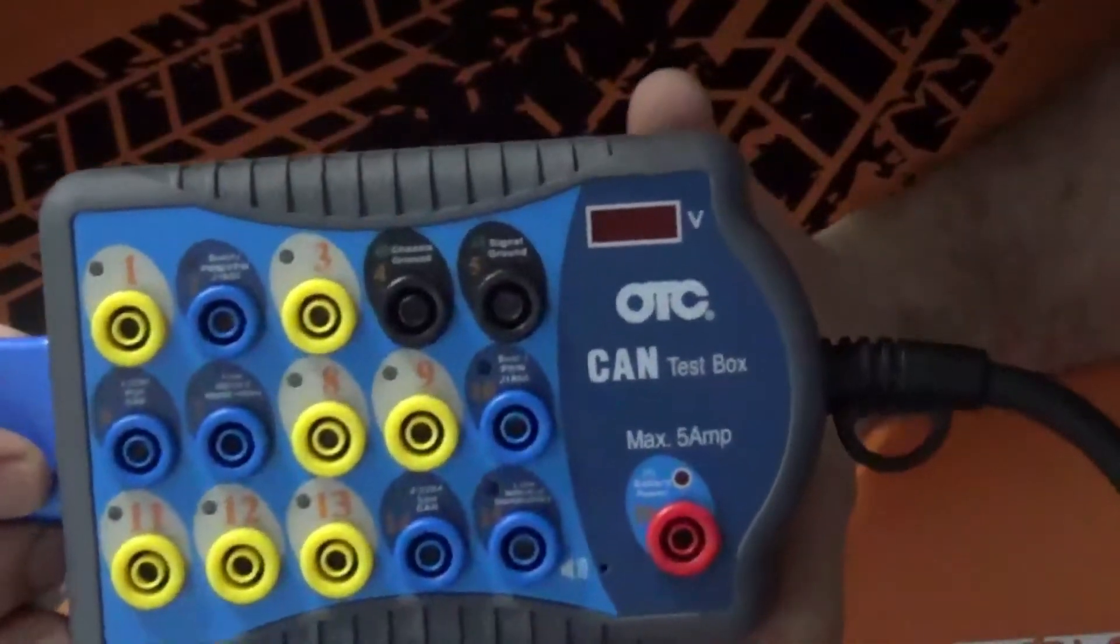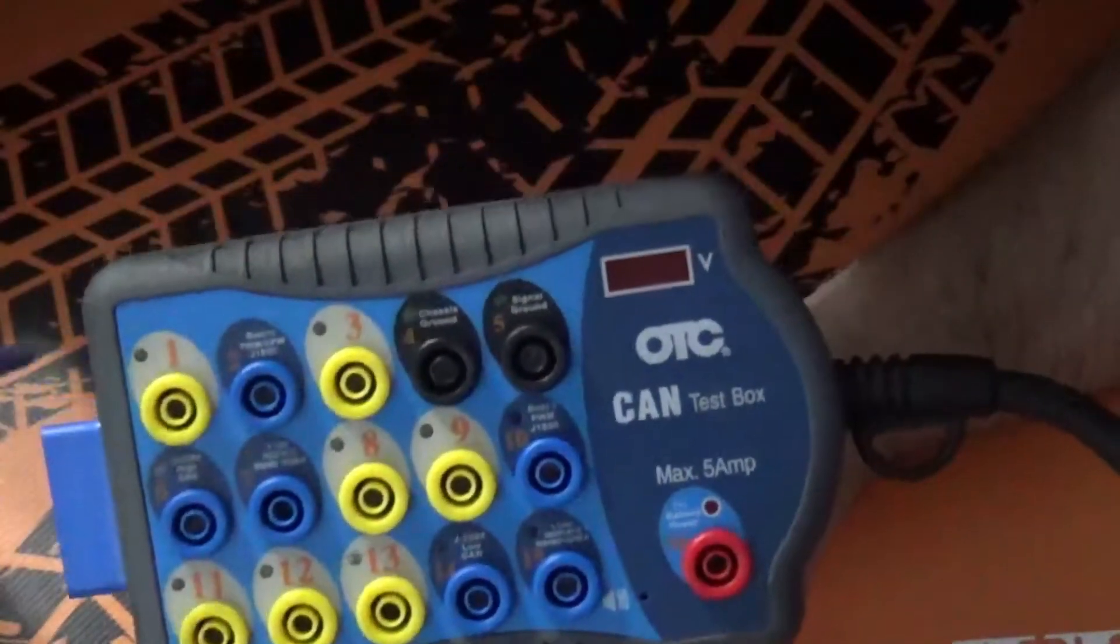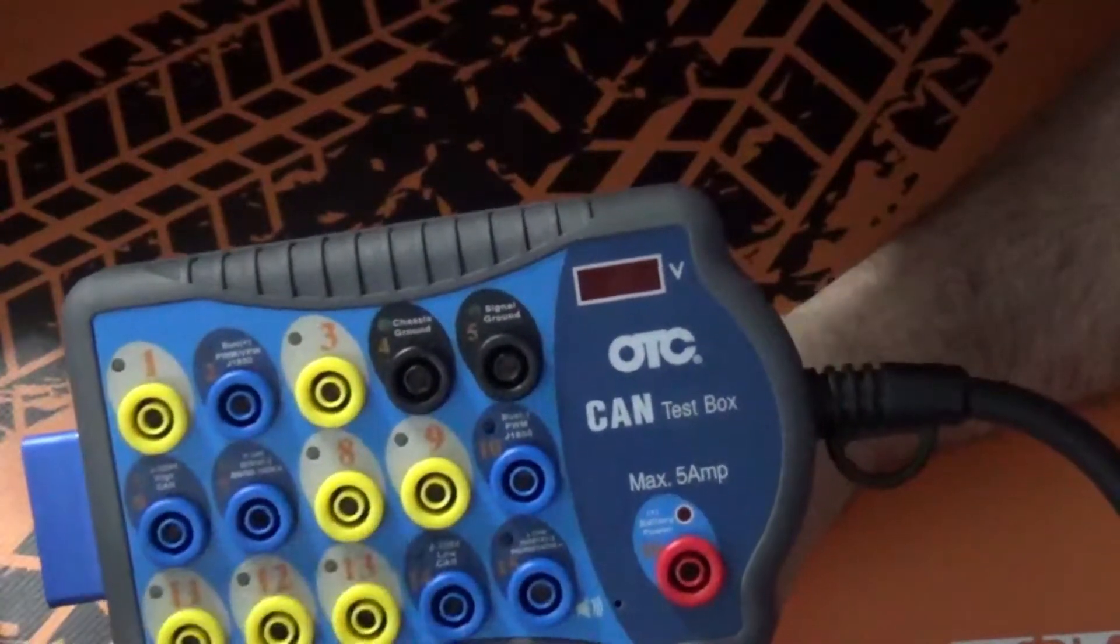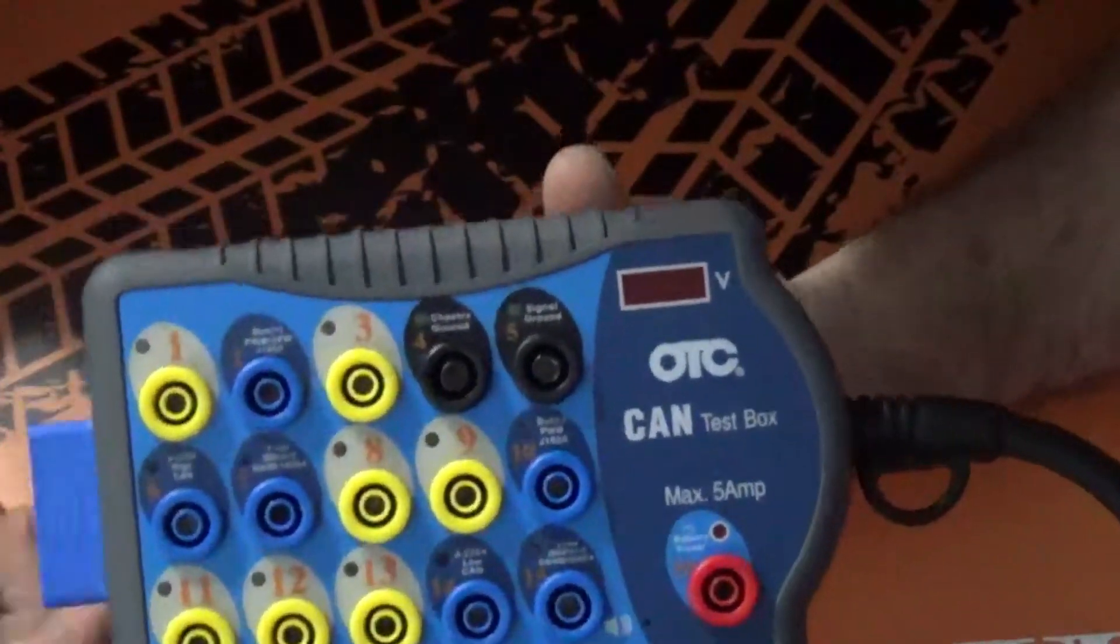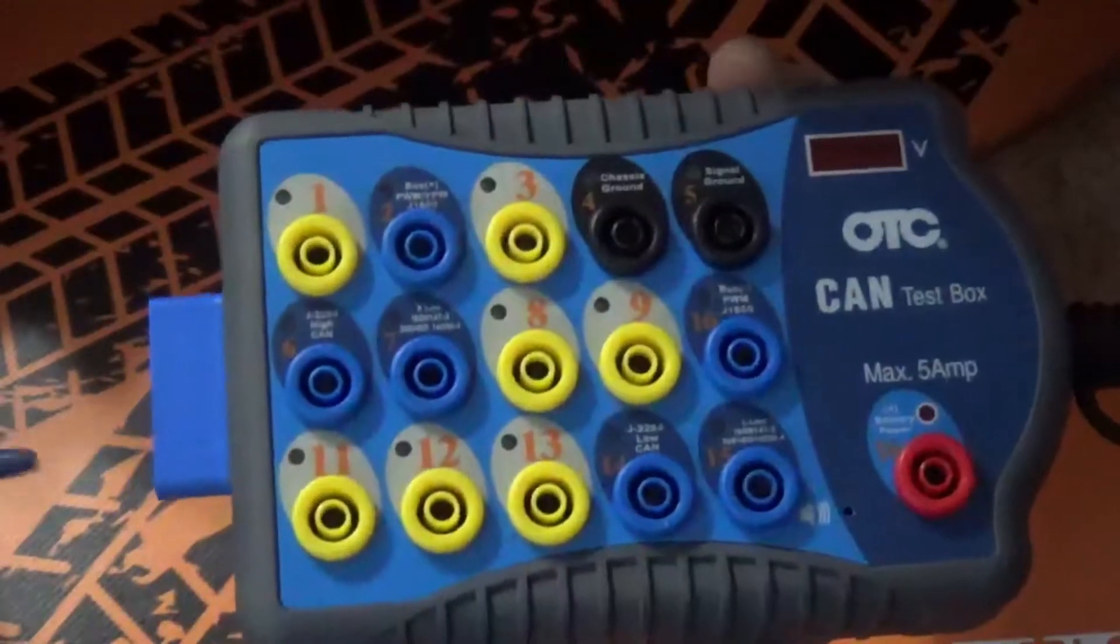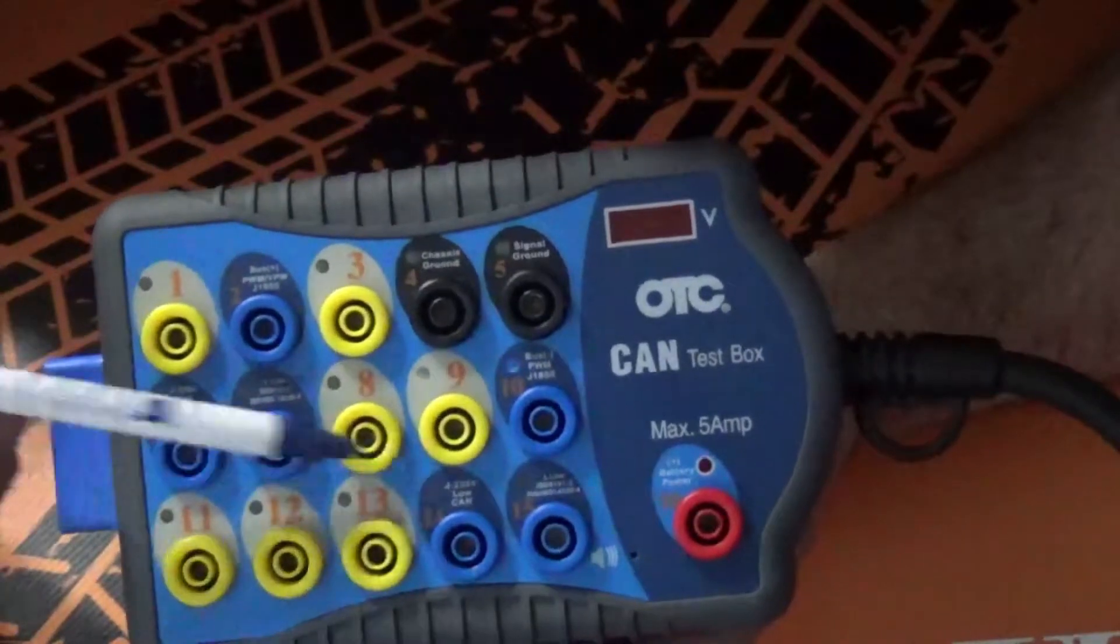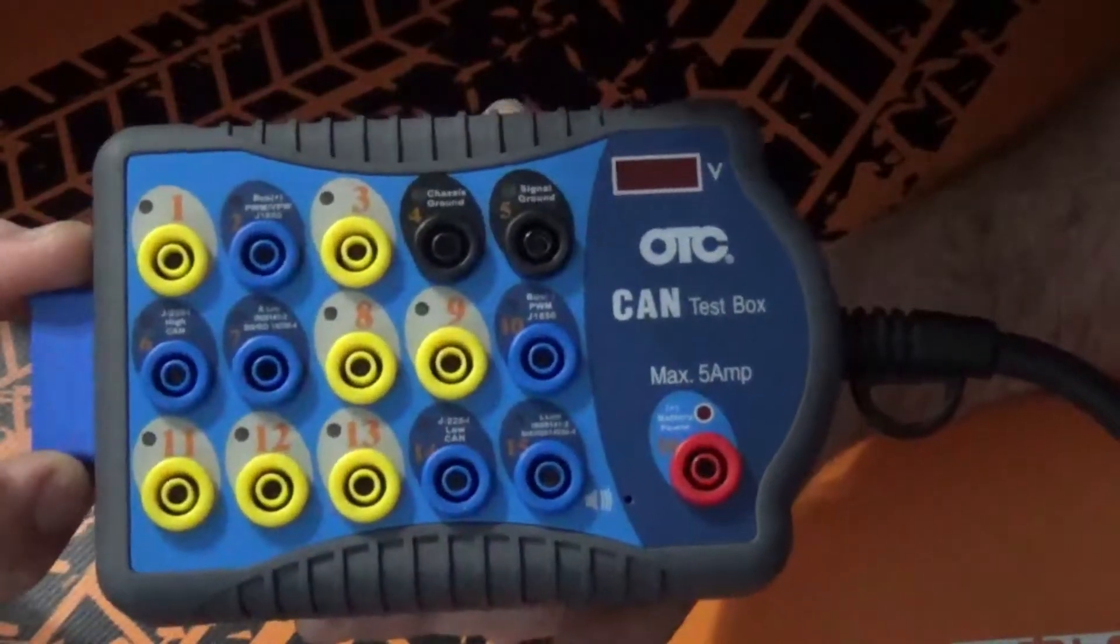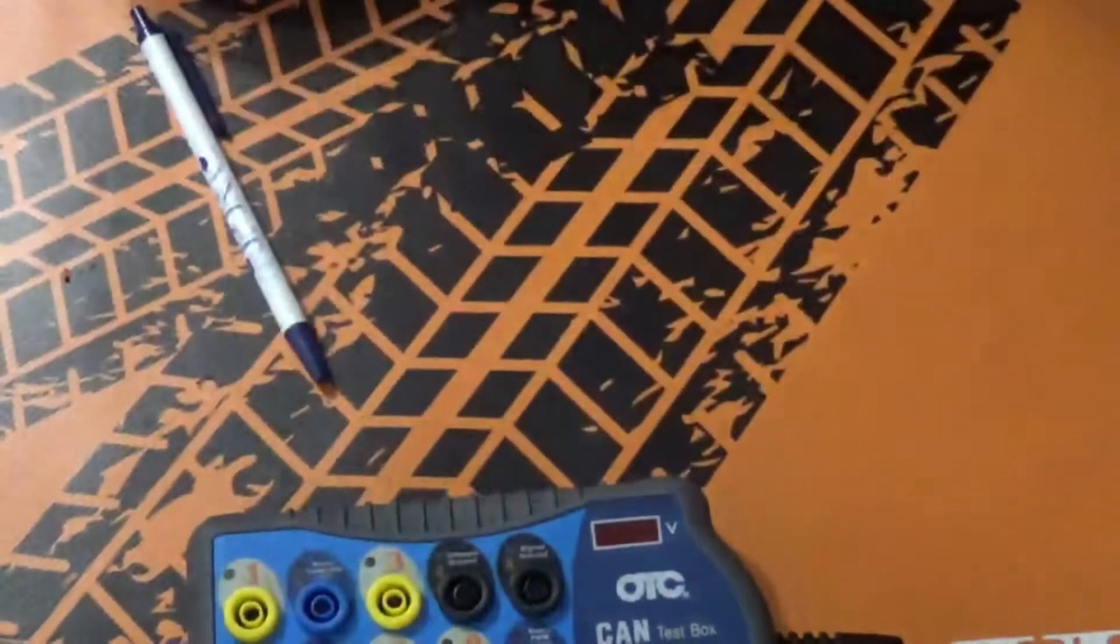Now they did add some other little features because when these guys first came out, there was like no lights or anything onto it. But on the newer systems, they actually have LEDs. And what the LEDs will do is if you have communication that is happening onto it, they will actually light. So if you would take and plug your scan tool in and then go try to communicate with it, you would actually see like one of the LEDs that would light up. And that would mean that it is working.